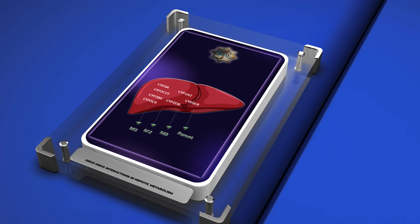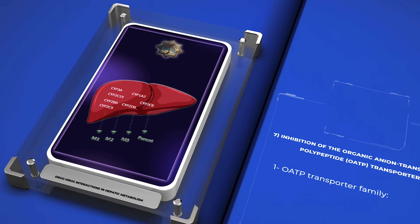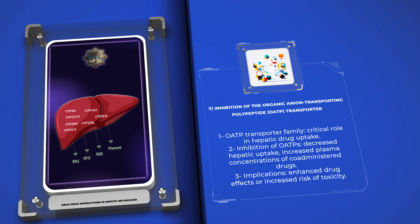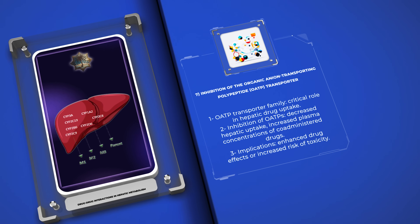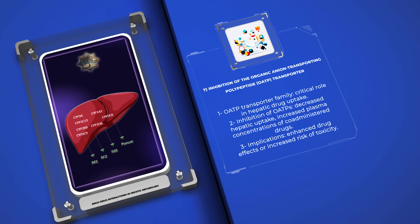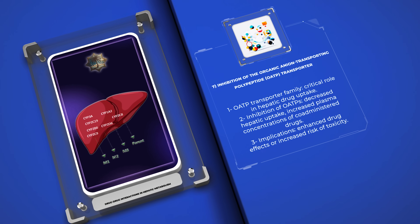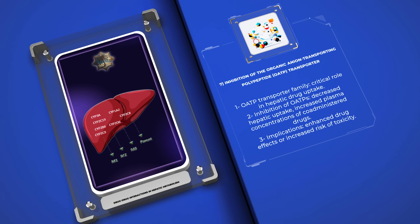The organic anion-transporting polypeptide transporter family plays a critical role in the hepatic uptake of many drugs, including statins, antibiotics, and antivirals. Inhibition of OATPs by certain medications, such as gemfibrozil or rifampin, can lead to decreased hepatic uptake and increased plasma concentrations of co-administered drugs. This interaction can result in enhanced drug effects or increased risk of toxicity. Understanding the inhibitory potential of drugs on OATPs is essential for safe and effective pharmacotherapy.